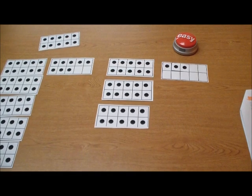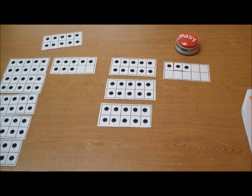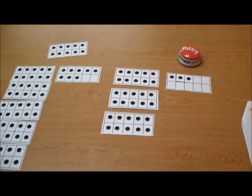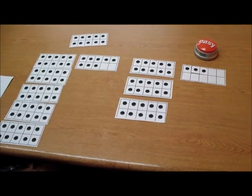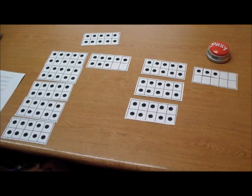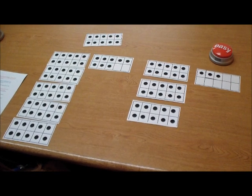Now let's use the compensation strategy to find out how many baseball cards Alex has all together. What dots could you move from one set of 10 frames to another to make the numbers easier to combine?